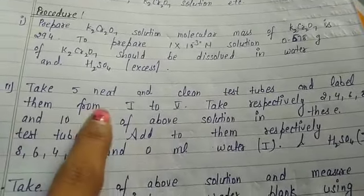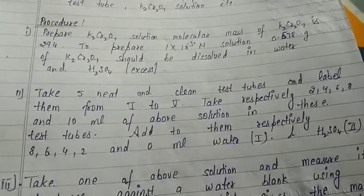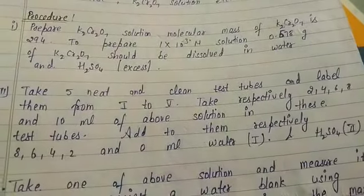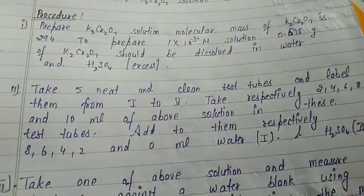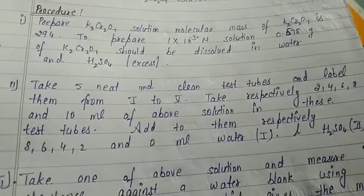Take 5 neat and clean test tubes and label them from 1 to 5. Take respectively 2, 4, 6, 8, and 10 ml of above solution in these test tubes. Add to them respectively 8, 6, 4, 2, and 0 ml water and H₂SO₄.